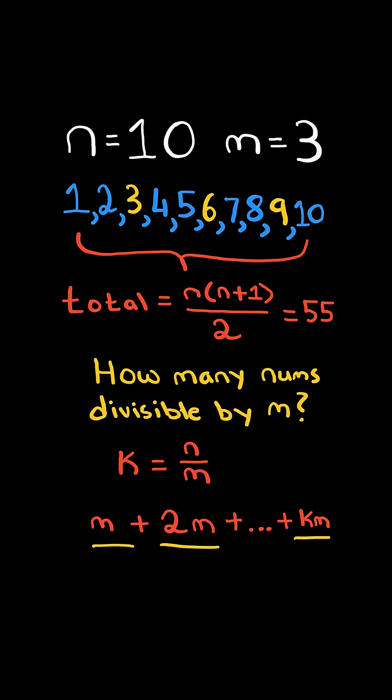These numbers follow the pattern m, 2m, all the way up to km. We can common factor out m and we know the formula for the sum of numbers from 1 through k.